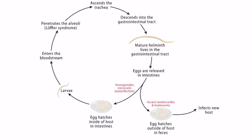The pathophysiology of Loeffler syndrome can be a bit confusing, so we've included a diagram about the life cycle of organisms that can cause Loeffler syndrome. You should know that there are three parasites that can cause Loeffler syndrome: Ascaris lumbricoides, Strongyloides stercoralis, and hookworms. We'll discuss Strongyloides stercoralis and hookworms in the next two videos. With this in mind, let's discuss the pathophysiology.